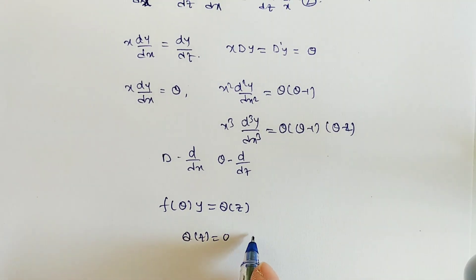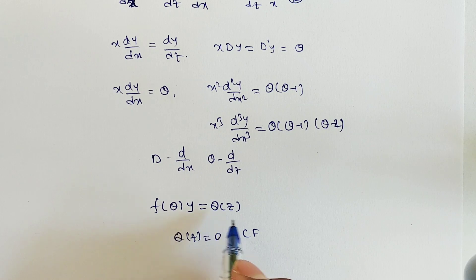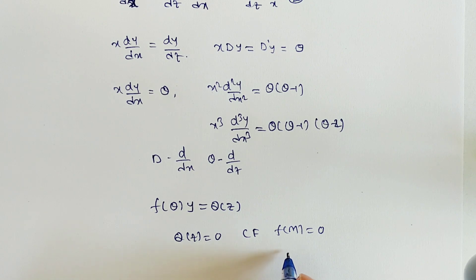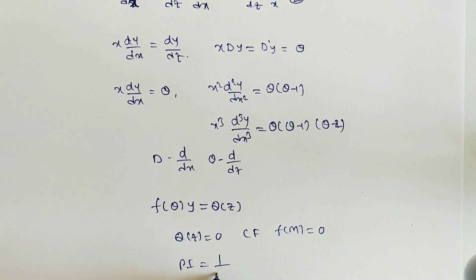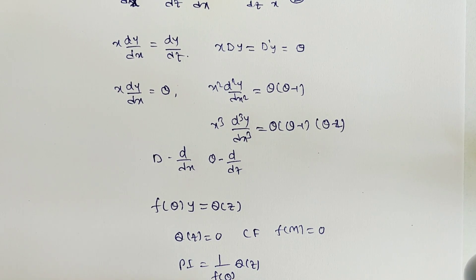To find the complementary function, set Q(z) = 0 and assume y = e^(mz) is a solution, giving the auxiliary equation f(m) = 0. Solve for the roots m, which may be real or complex, and write the complementary function in terms of z. Then replace z = log x to express the solution in terms of x. For the particular integral, PI = (1/f(θ)) · Q(z), applying the same procedures as before, and finally replacing z with log x.